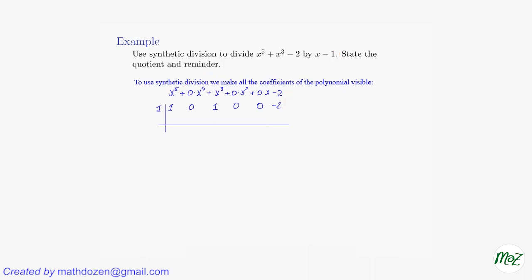The division is easy. We carry 1 over. Then 1 times 1 is 1, so 1 shows up here, and 0 plus 1 is 1. Then again 1 times 1 is 1, and 1 plus 1 is 2 — shows up there. Then 2 times 1 is 2, shows up there. 0 plus 2 is 2, shows up here. And again 2 times 1 gives us positive 2, shows up here. 0 plus 2 is 2. And then 1 times 2 gives us positive 2, and negative 2 plus 2 is 0.